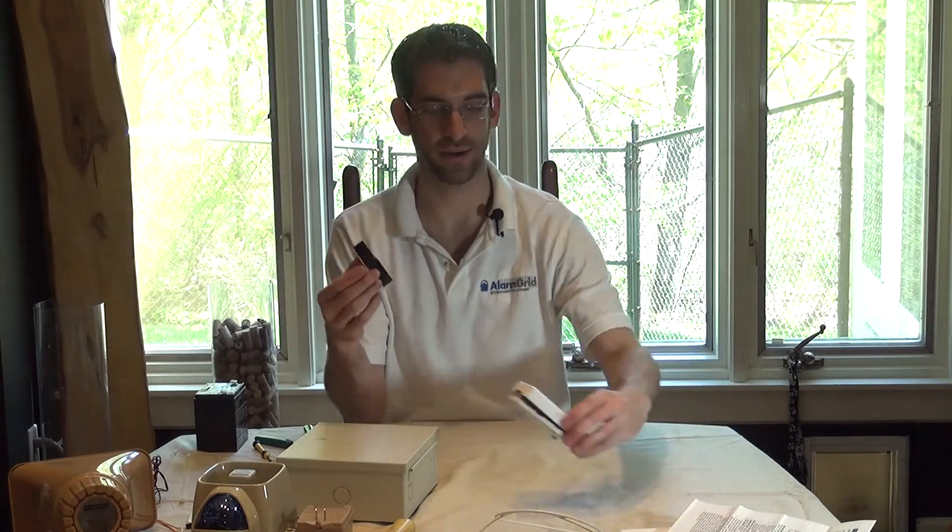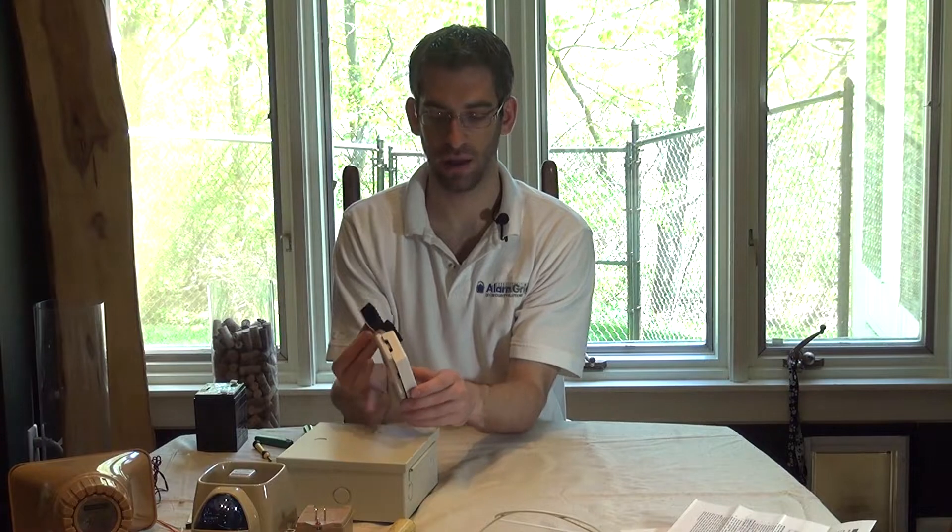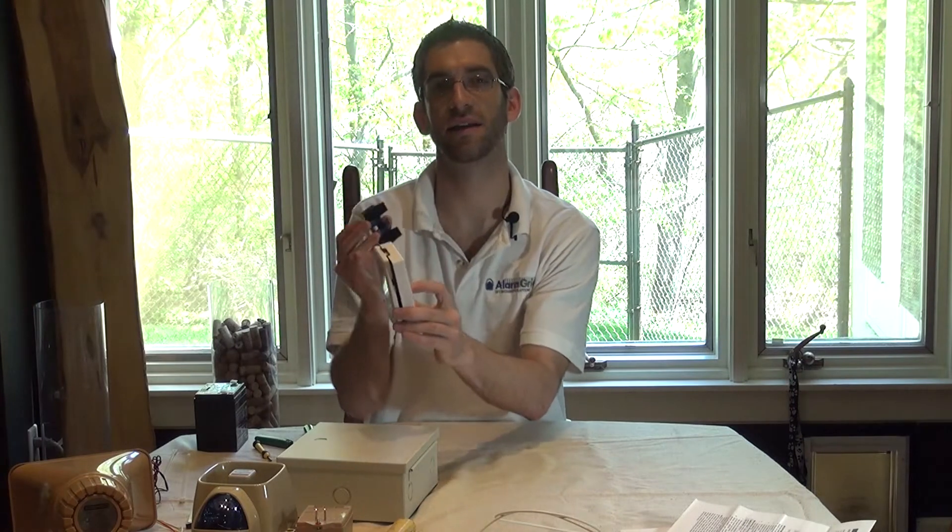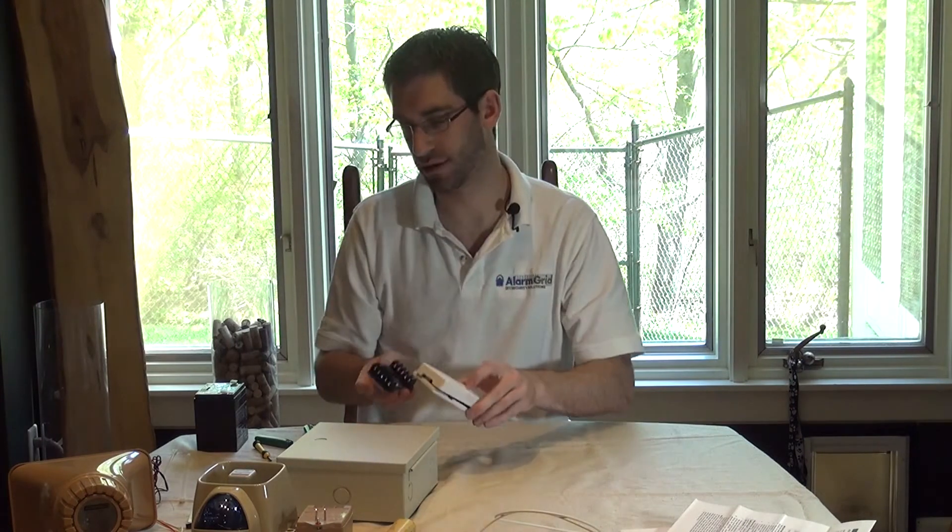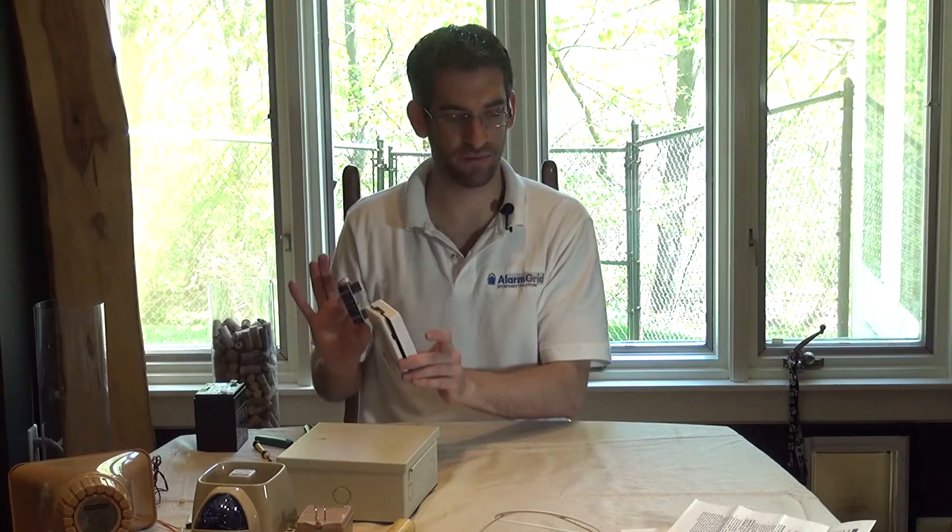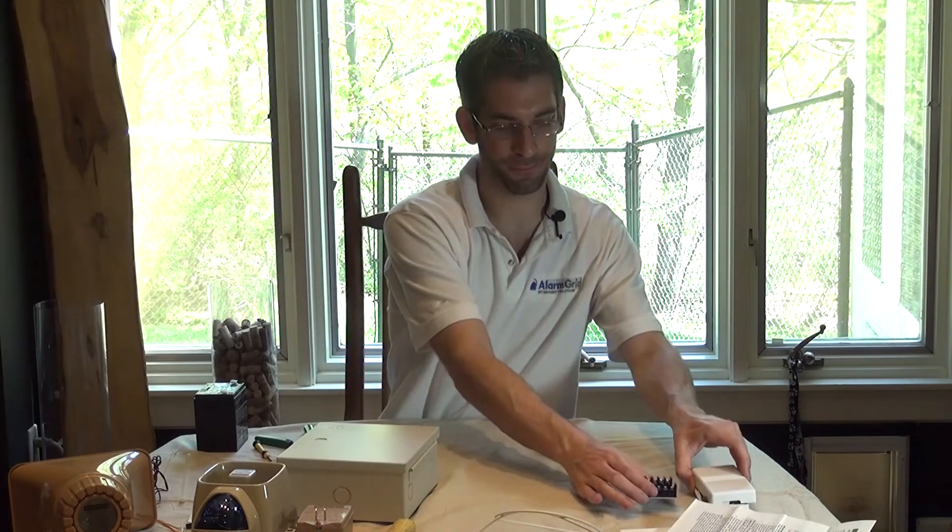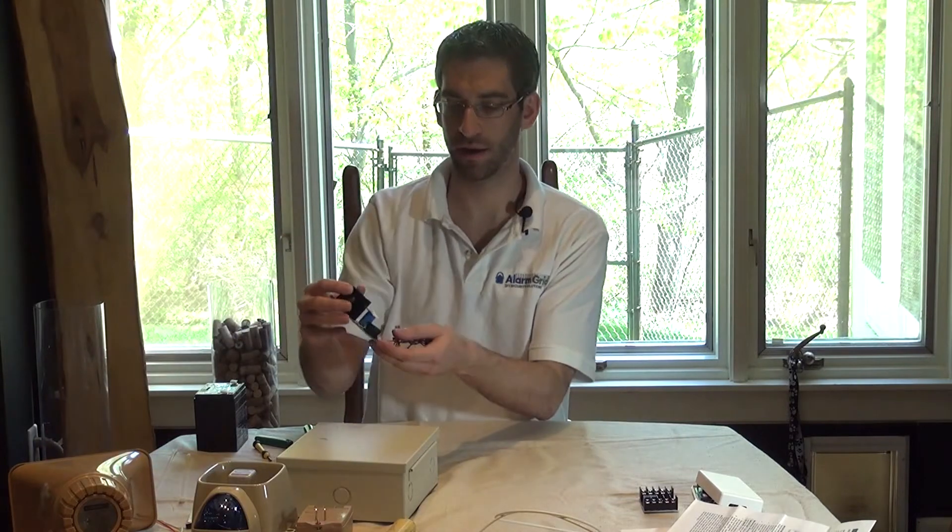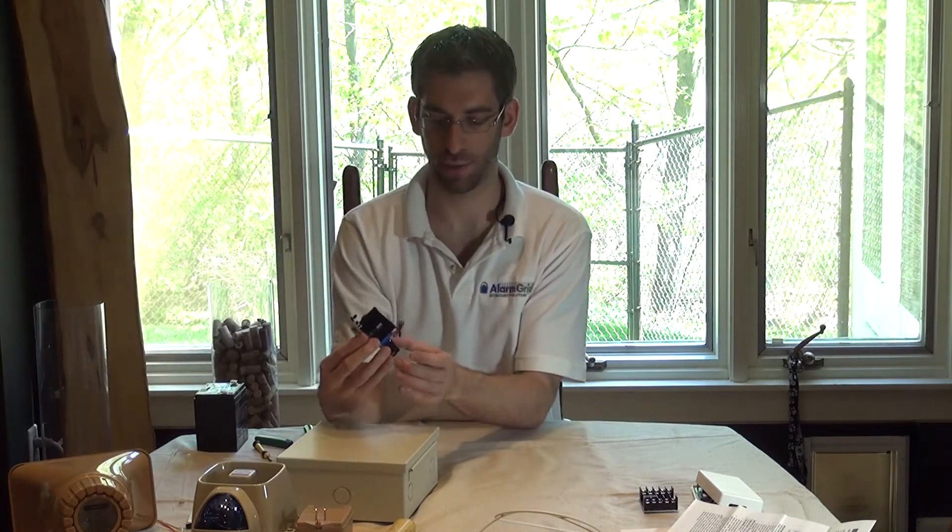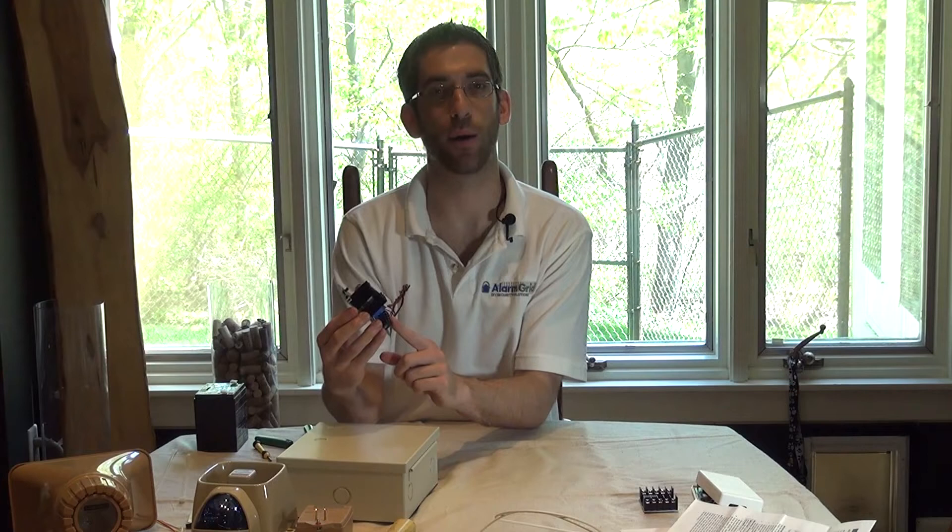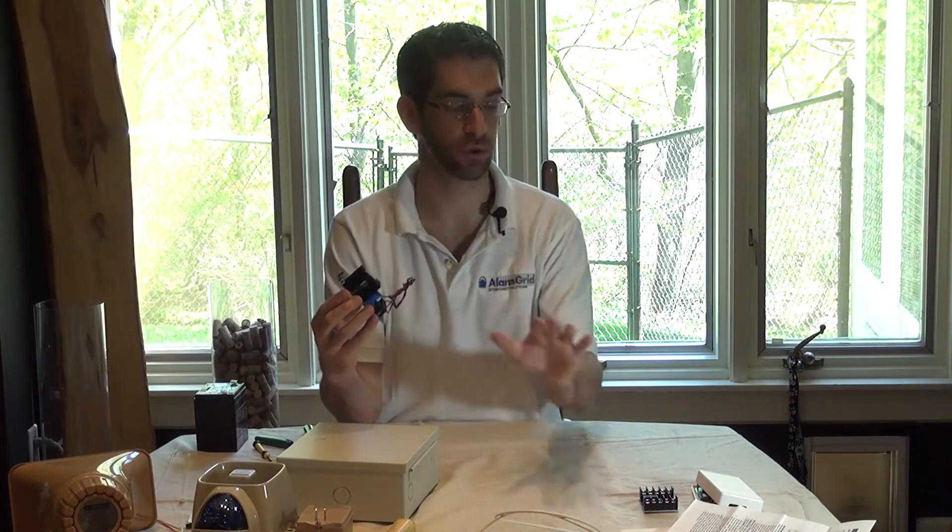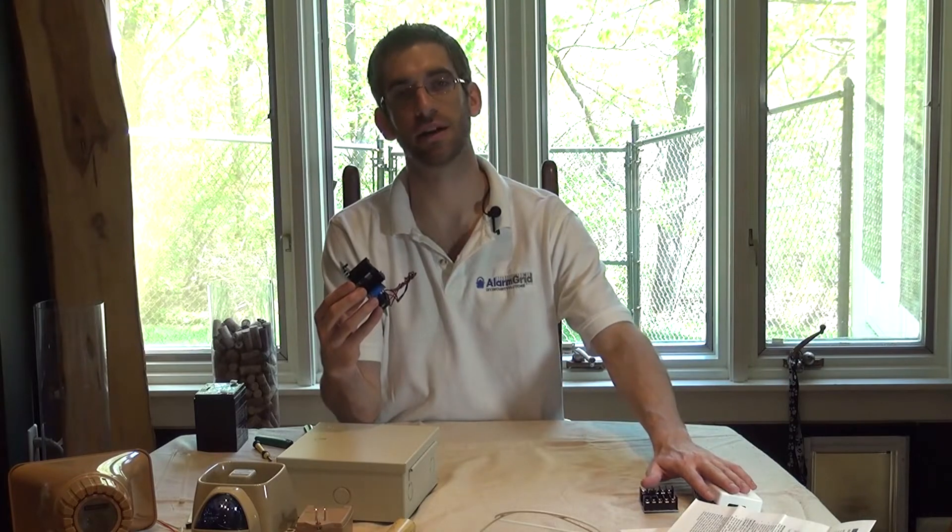So these two items, the 5800RL or the RBSN TTL, these are going to be the relays. This is what the panel is going to tell to kick on, which will activate the siren. Now because both of these units need power, you're also going to need an auxiliary power supply. An auxiliary power supply is a circuit board that takes AC power from a transformer plugged into the wall, converts it to DC power, which will power the siren and the relay module.